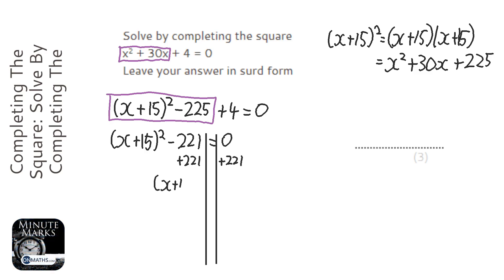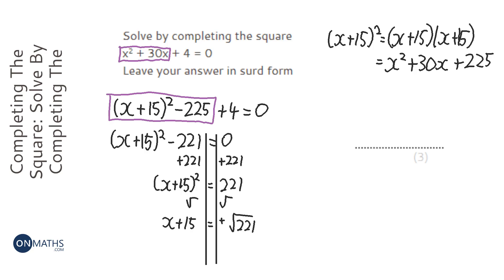Next we want to square root both sides, so it's—I don't need the brackets anymore because I've got rid of that squared—so it's just x+15 equals square root 221. Now be careful here: when you square root something you get plus and a minus. You don't often have to put these in, but I think it's useful for this question.